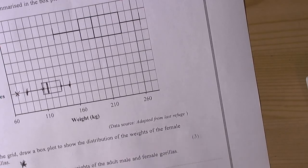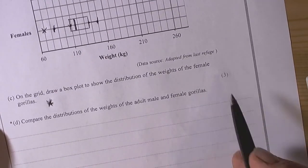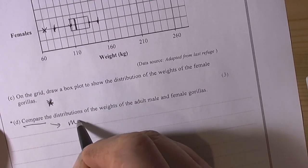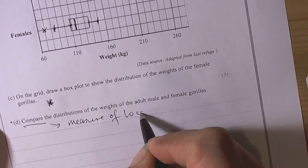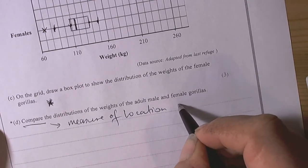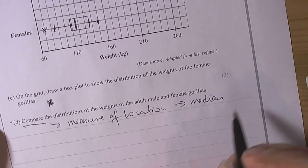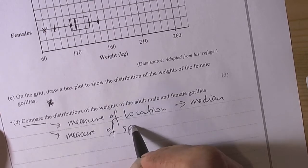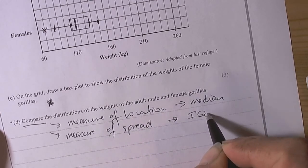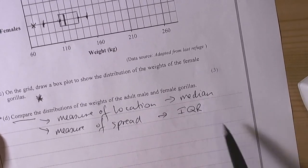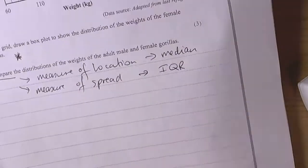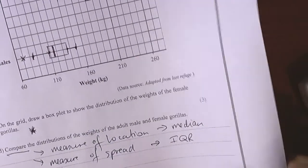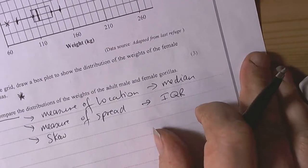So that's the box plot drawn. It then says compare the distribution of the weights of the adults and the females. Compare, well we always then must look for a measure of location. So that's an average. So on box plots we're always comparing the median. And we must look for a measure of spread. And on box plots again the classic measure of spread will be the interquartile range. Now it's worth 4 marks. So it's worth 4 marks so we should also consider talking about the skew to make sure that we've got quite a lot of things to compare here.